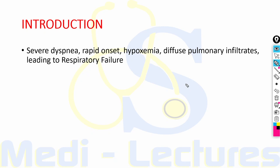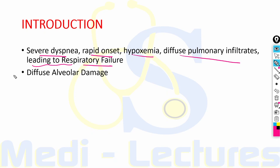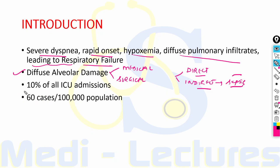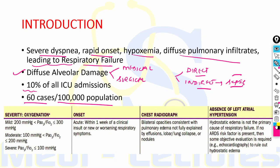ARDS is a clinical syndrome of severe dyspnea of rapid onset, hypoxemia leading to diffuse pulmonary infiltrates, and finally respiratory failure. The underlying pathology is diffuse alveolar damage, which can occur from many underlying medical as well as surgical disorders. Causes can be direct or indirect. ARDS is responsible for 10% of all ICU admissions, with a prevalence of around 60 cases per lakh population.